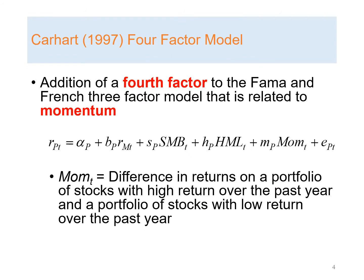This slide shows the Carhart four-factor model. Besides market return, firm size, and market-to-book ratio, a fourth factor is added to the Fama-French three-factor model. Momentum is calculated from the difference in returns on a portfolio of stocks with high return over the past year and a portfolio of stocks with low return over the past year.